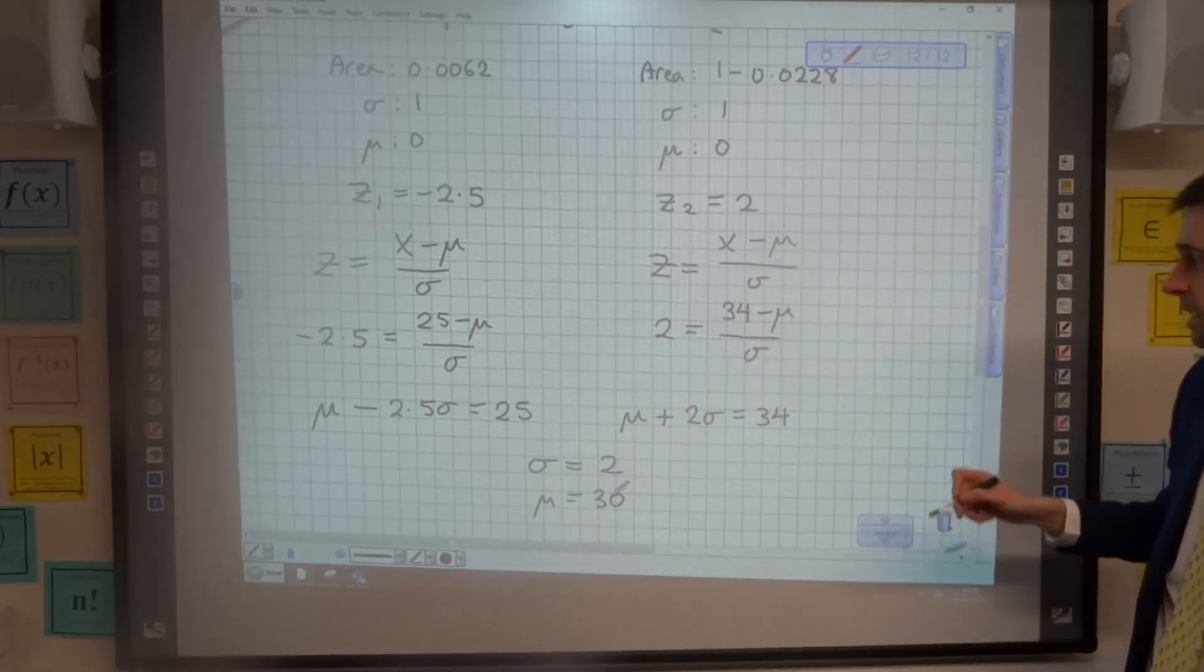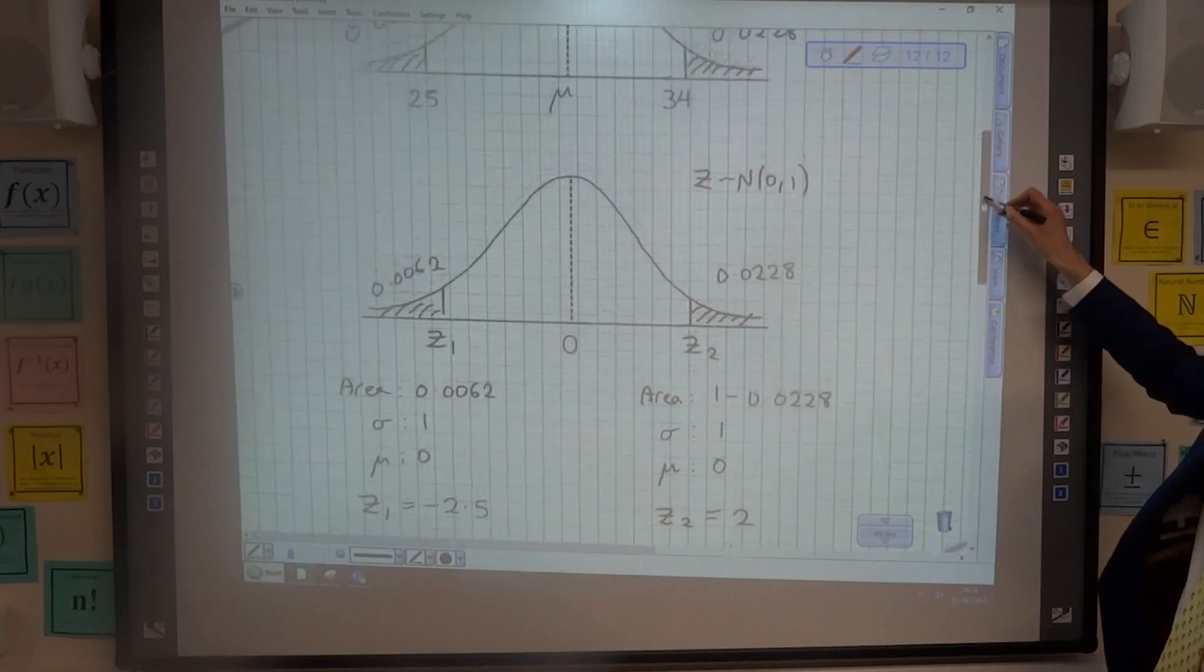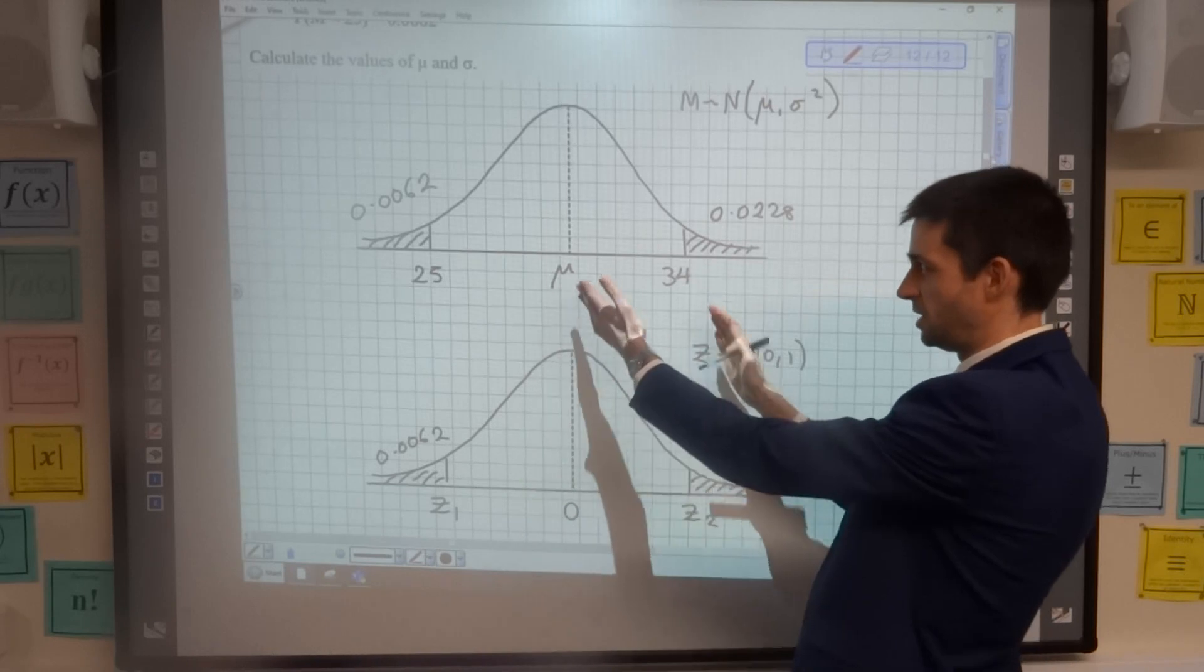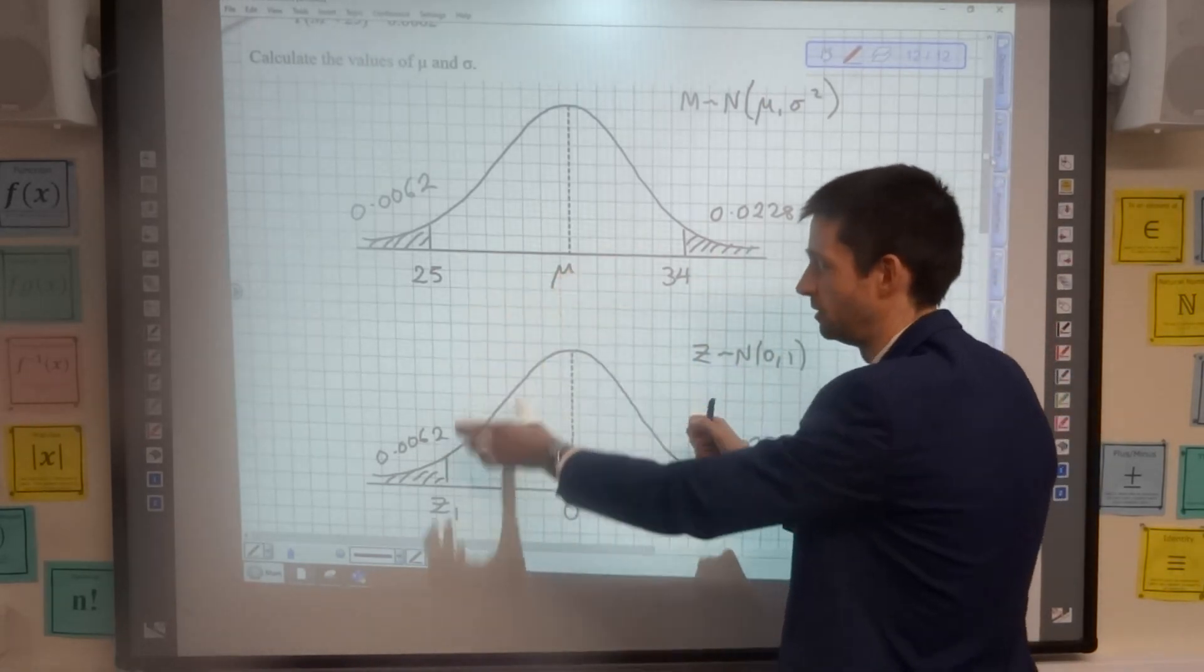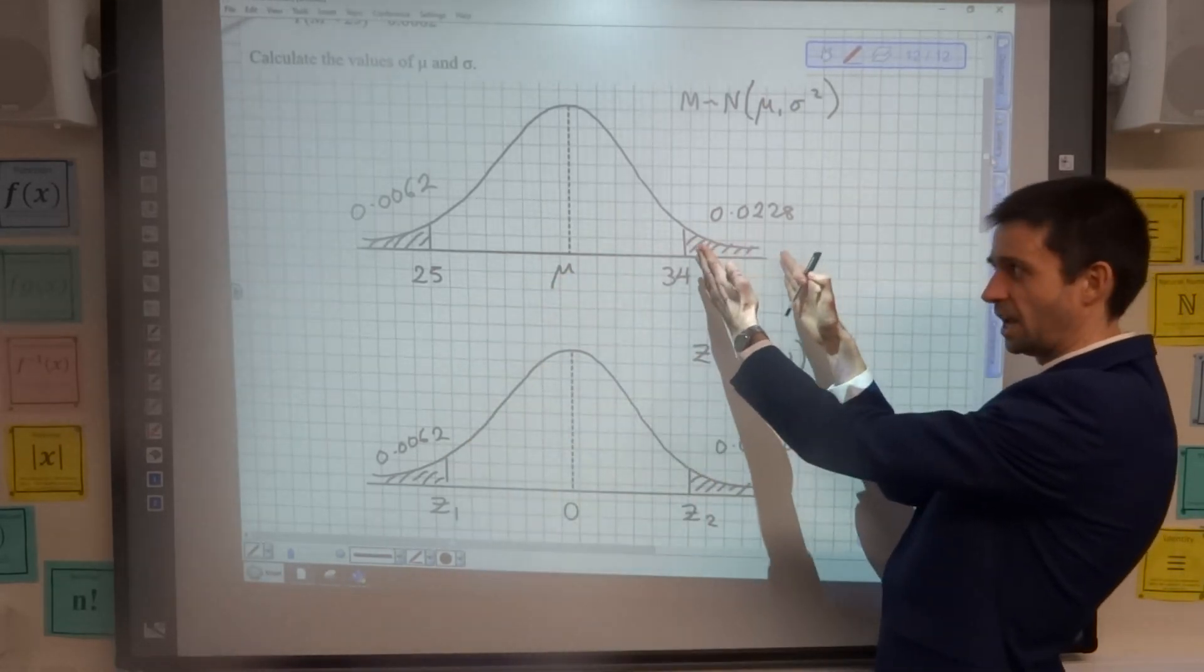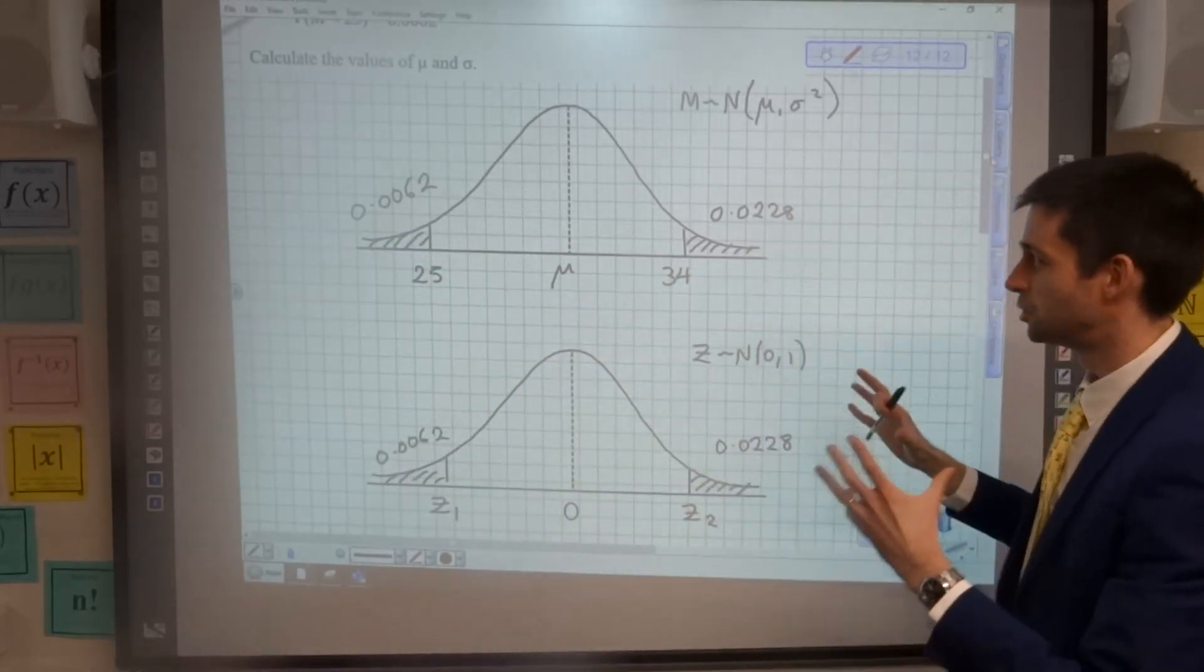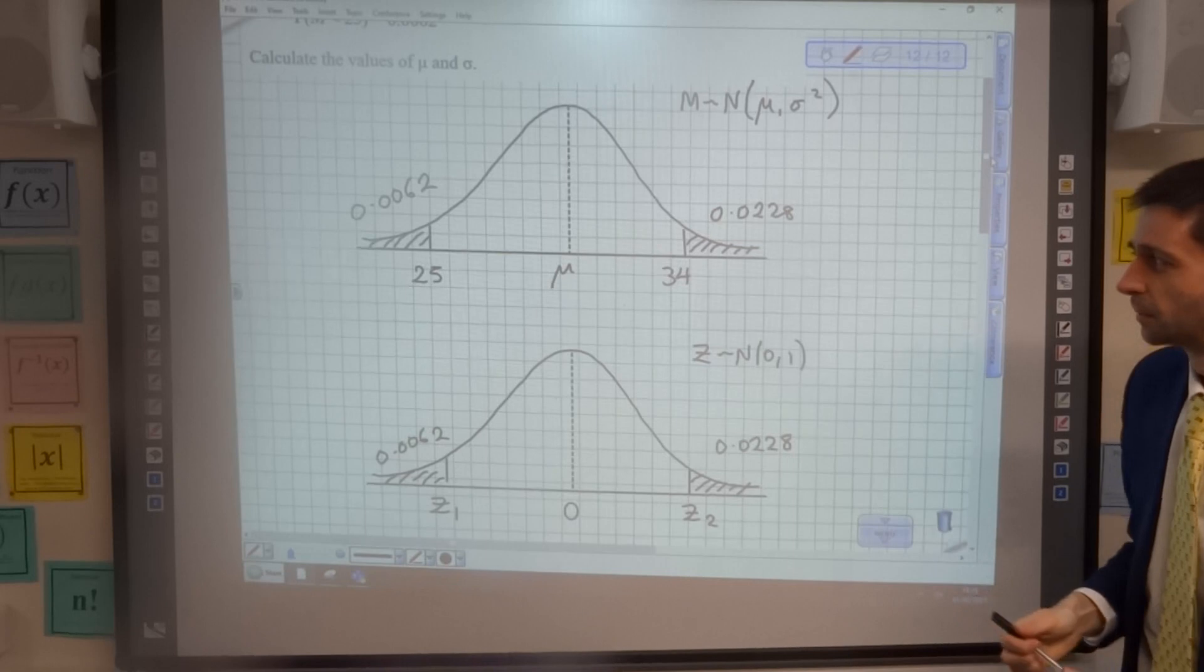I'm just thinking about does that make sense in the context of the question. Well, the original question here: 34, 25, 30. So the mean is closer to 34 than it is to 25. That makes sense because this area is a little bit bigger than that one and the distribution is symmetrical. So it's all lending weight to us thinking we've got the right answer here.